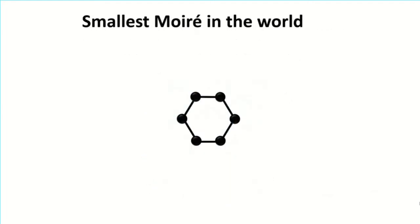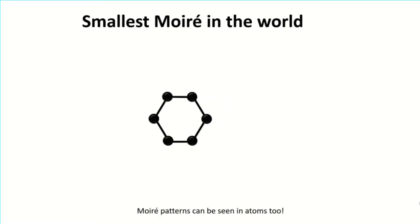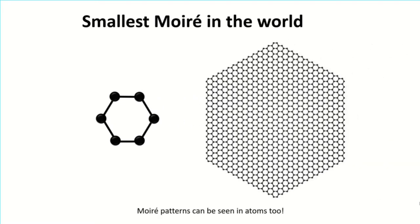We at the University of Illinois work with such moiré patterns but at the atomic scale. More specifically, we work with graphene, which is a two-dimensional material consisting of a single layer of carbon atoms. The ball-and-stick structure shown here is one hexagonal cell of graphene. The black spheres are the carbon atoms and the sticks represent the bonds between those atoms. Extending this structure in two dimensions results in graphene. You can actually create this material at home using a pencil lead and a scotch tape — it is a very cool experiment indeed.